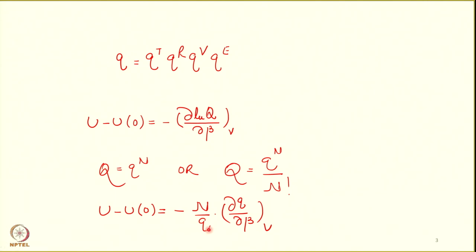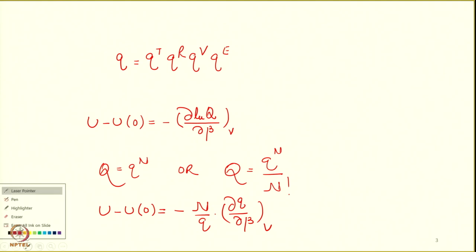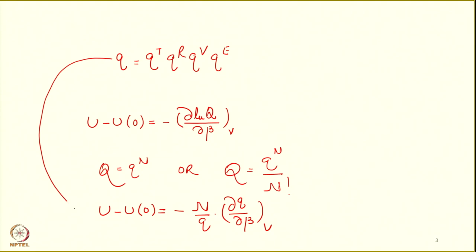So far, we have been considering Q equal to Q_t because most of the problems we dealt with included monatomic systems. If it is diatomic, triatomic, or polyatomic, then we need to consider rotational, vibrational, and electronic contributions. In that case, Q will have to be the product of the molecular partition functions: translational, rotational, vibrational, and electronic. Similarly, when you talk about entropy, Gibbs function, Helmholtz function, or enthalpy, you must first analyze which contributions are involved.